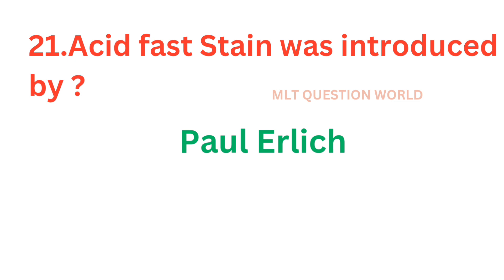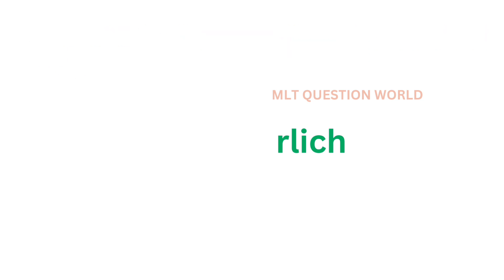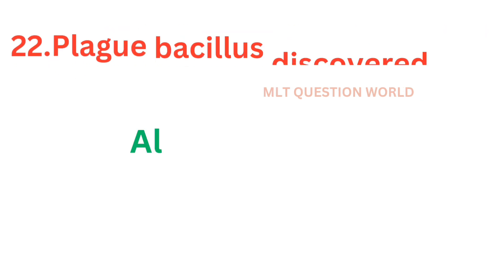Question number 21: Acid-fast stain was introduced by? Acid-fast staining was first introduced by Paul Ehrlich and it is modified by Ziehl and Nielsen.